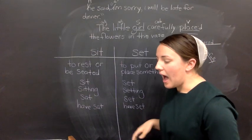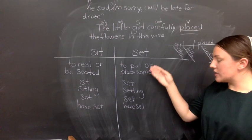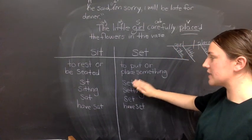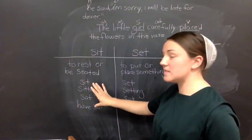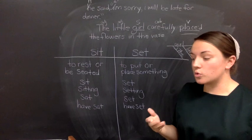And then, I have always set my umbrella from the wrap. These are the different forms of the word set. But each form means to put or place something. Each of these forms of sit, though they're a bit different from each other, mean to rest or be seated.